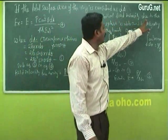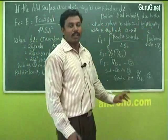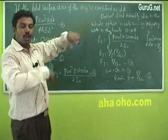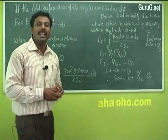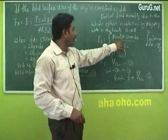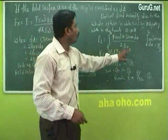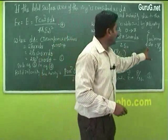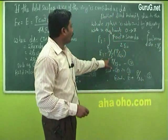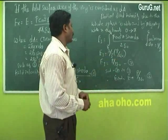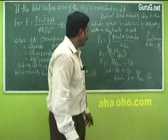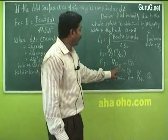Therefore, the electric field intensity due to the whole spherical sphere is obtained by integrating between limits 0 to π. So E3 = integral from 0 to π of p·cos²θ·sinθ·dθ / (2ε₀). We know that the integral of cos²θ·sinθ·dθ from 0 to π equals 2/3. Therefore E3 = (2/3)·p / (2ε₀) = p / (3ε₀).